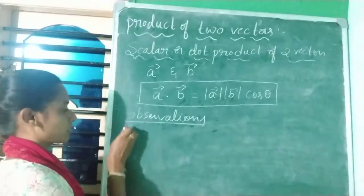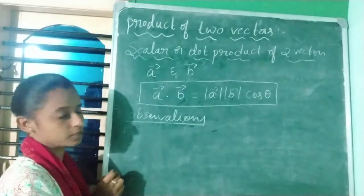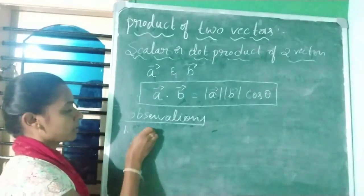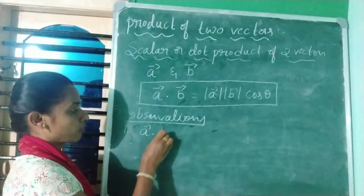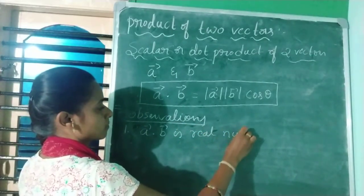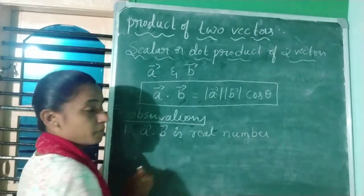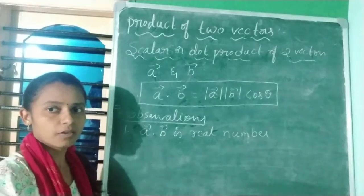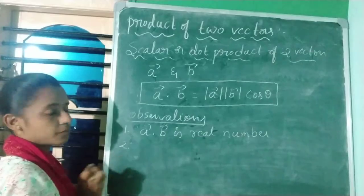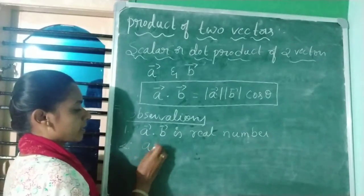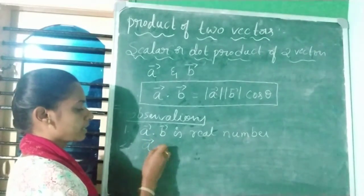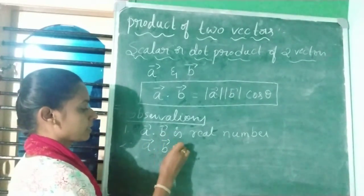The first observation of the scalar or dot product is that vector a · vector b gives a real number. There will be two vectors, and if you do their dot product, you will get a real number. Also, if a and b are two non-zero vectors and vector a · vector b equals zero,